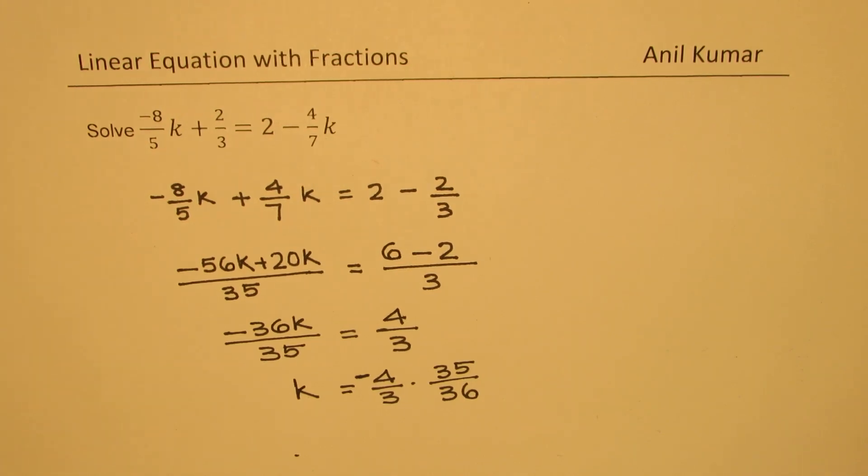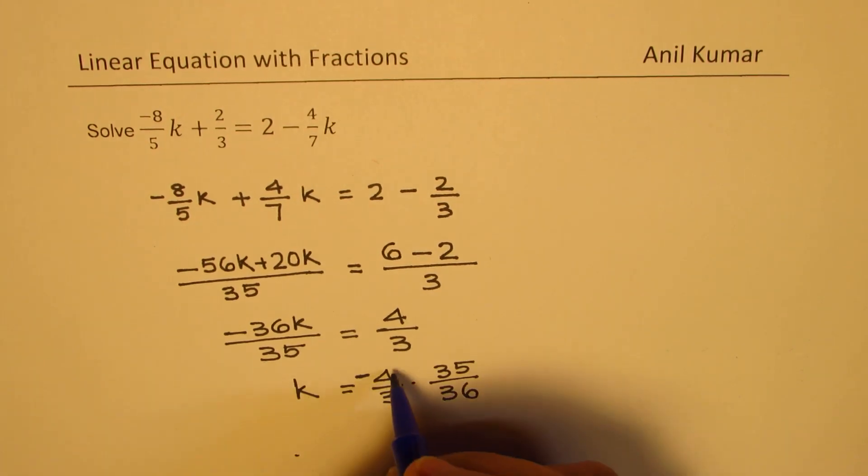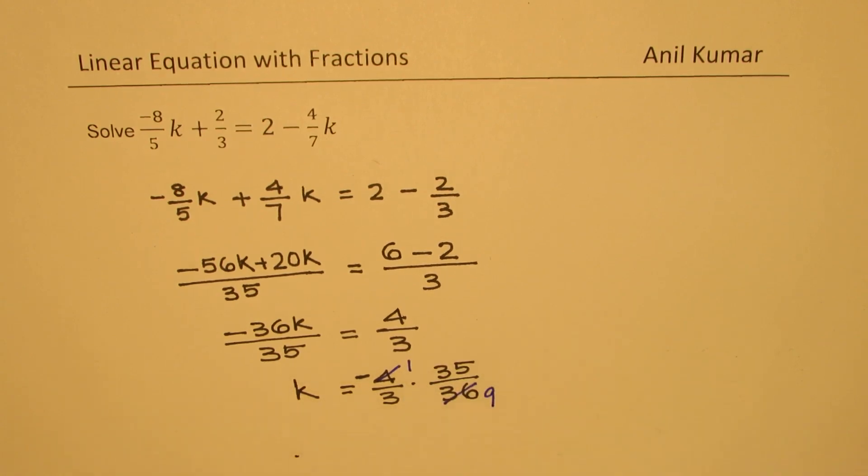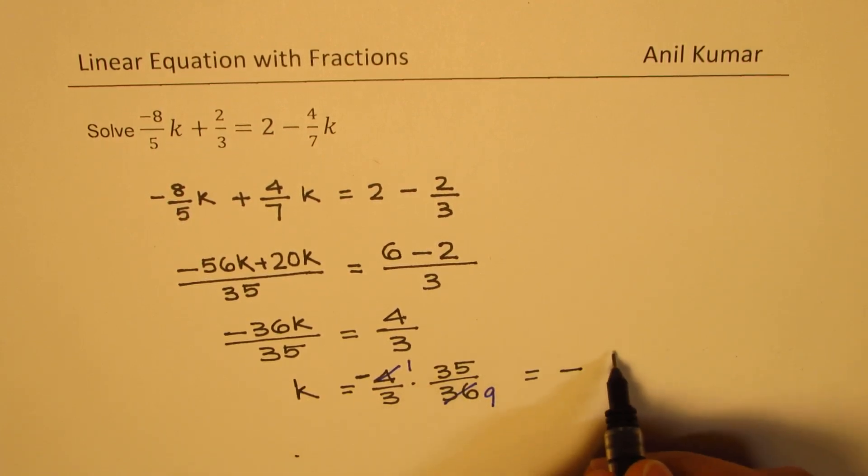You can simplify at this stage dividing 4 and 36. 4 goes 1 times and 9 times with 36. So that leaves you with a value of negative 35 in the numerator and 3 times 9 which is 27 in the denominator.